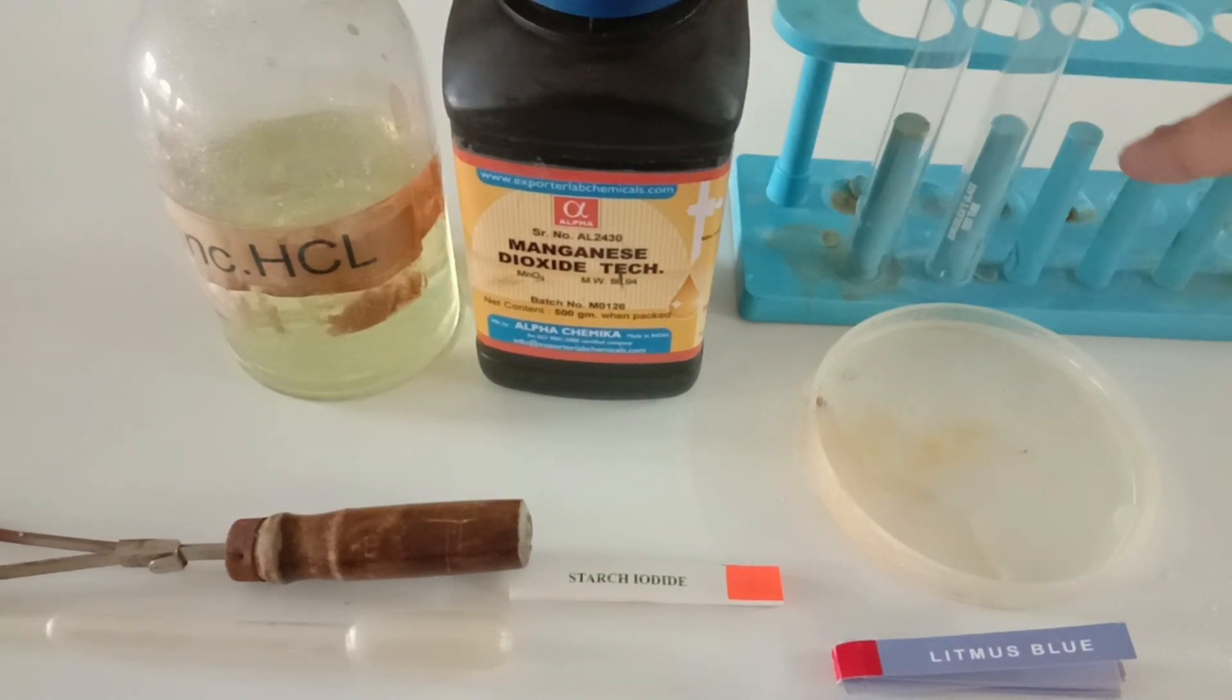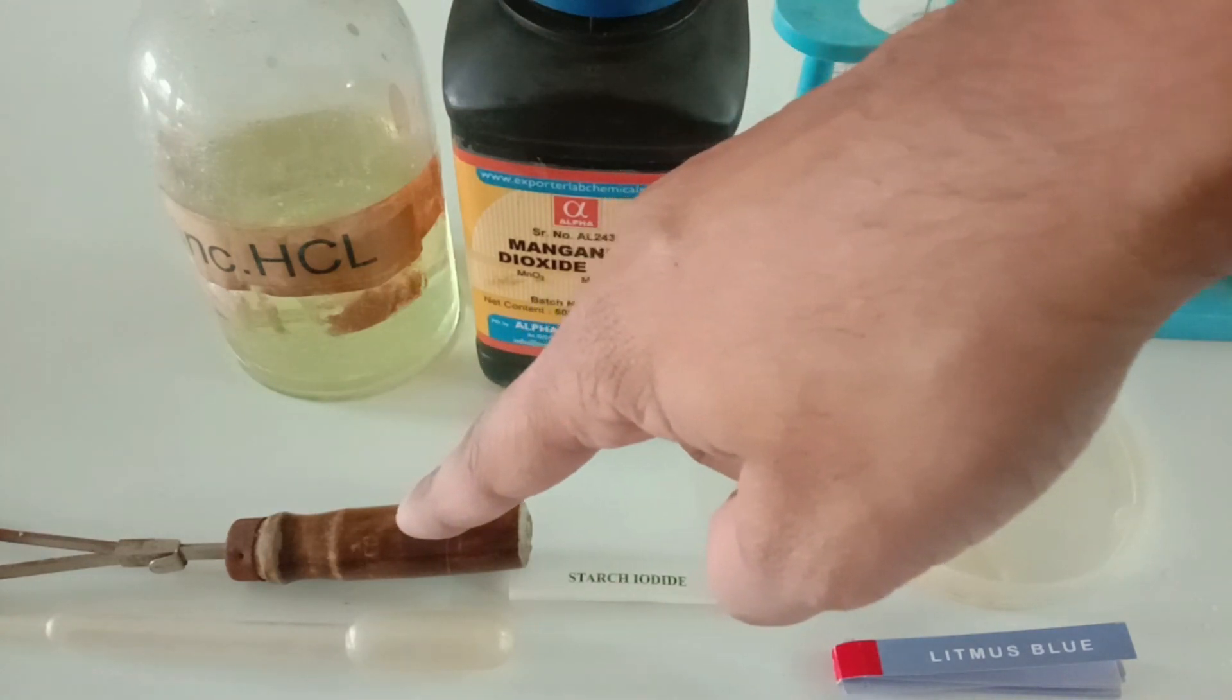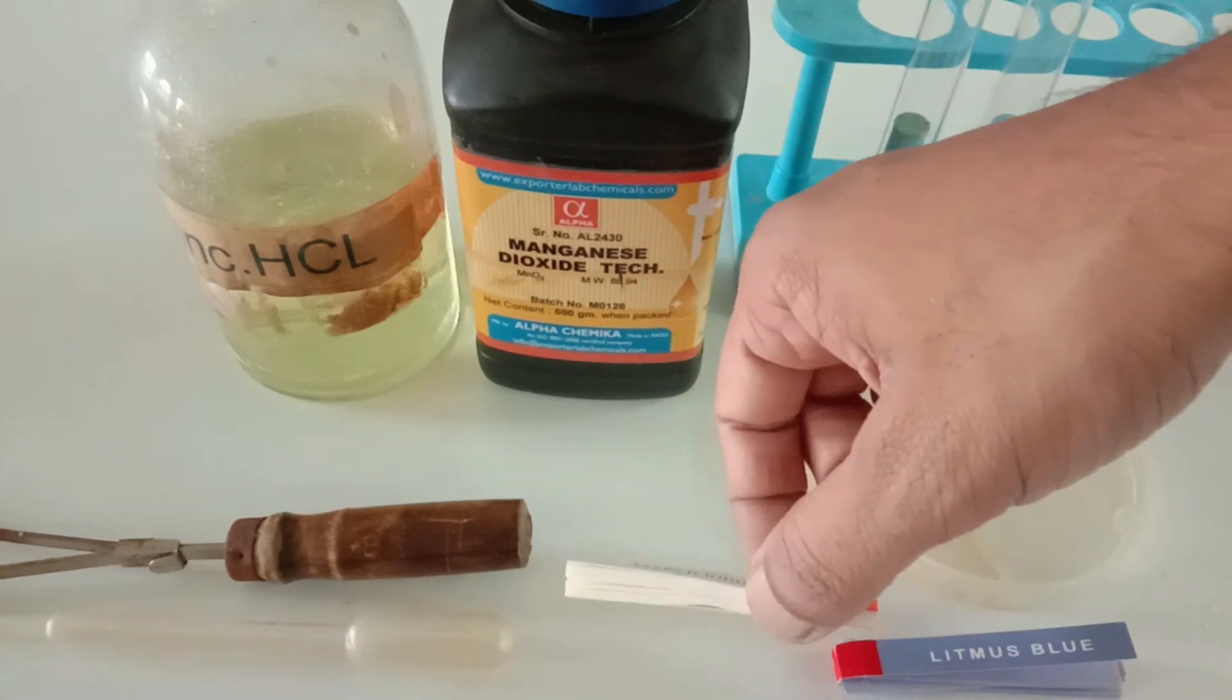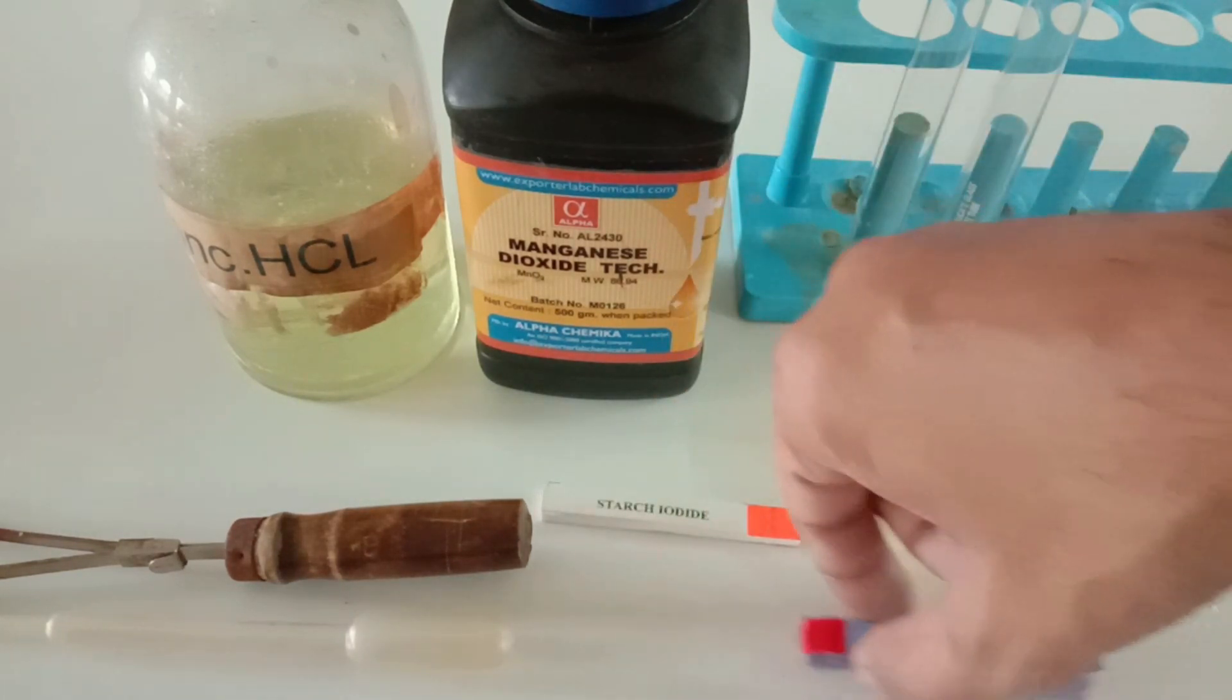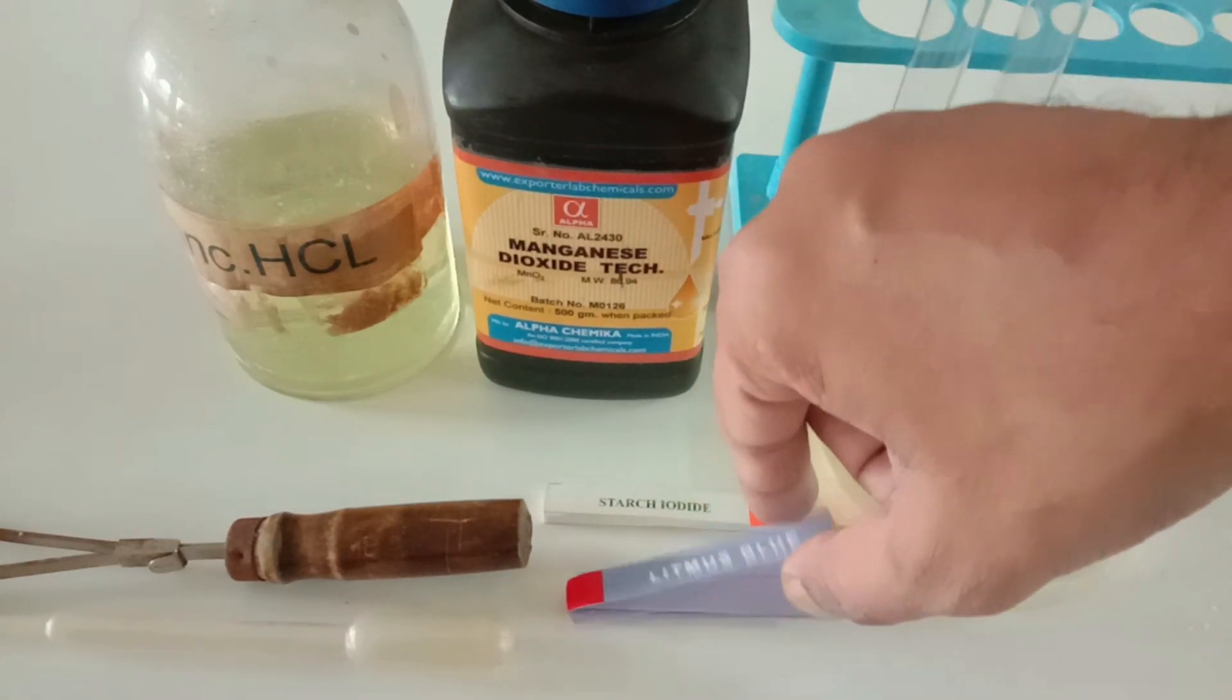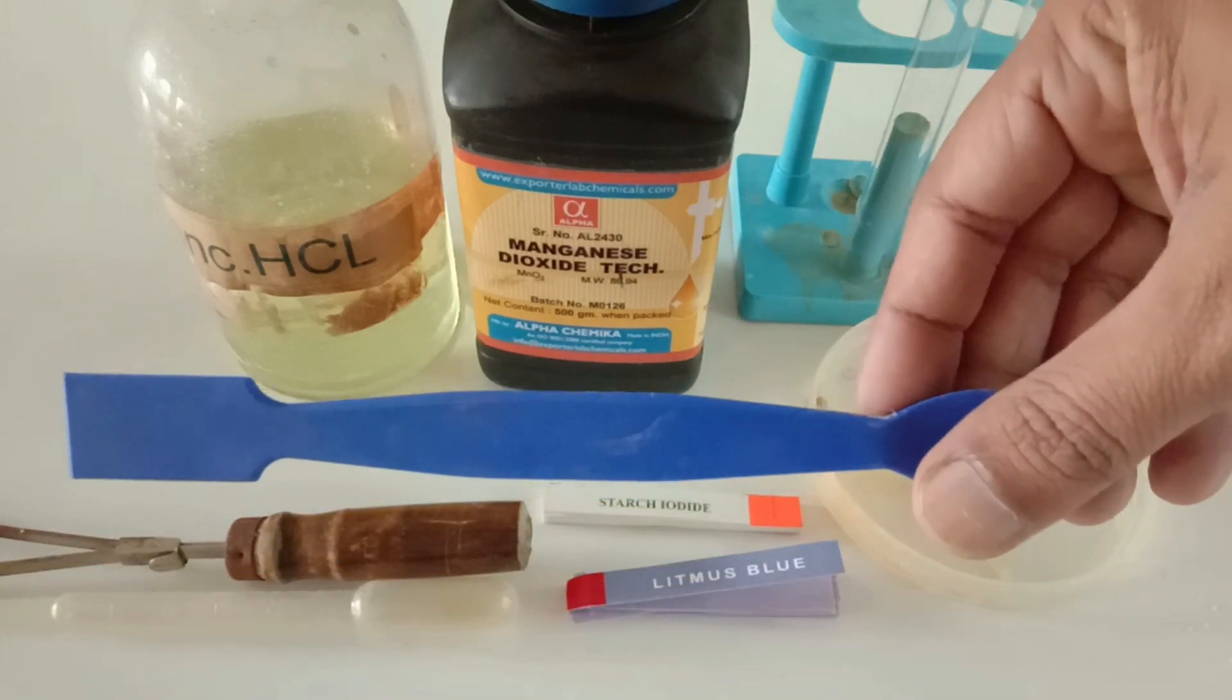Test tubes, test tube stand, some amount of distilled water in the petri dish. Make sure that you are not using tap water for this experiment. Test tube holder, white colored starch iodide paper, blue litmus paper, dropper, and spatula.